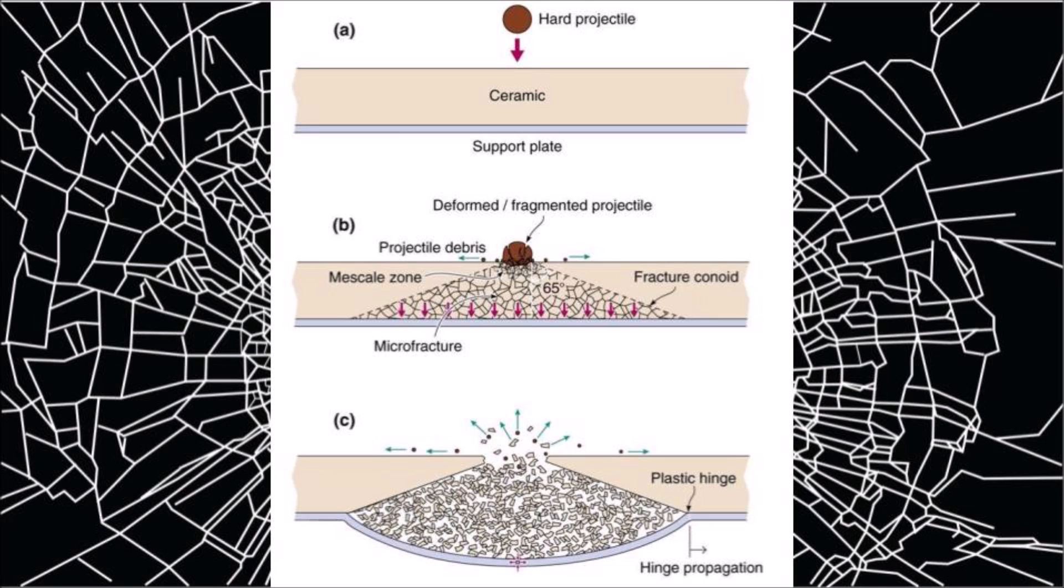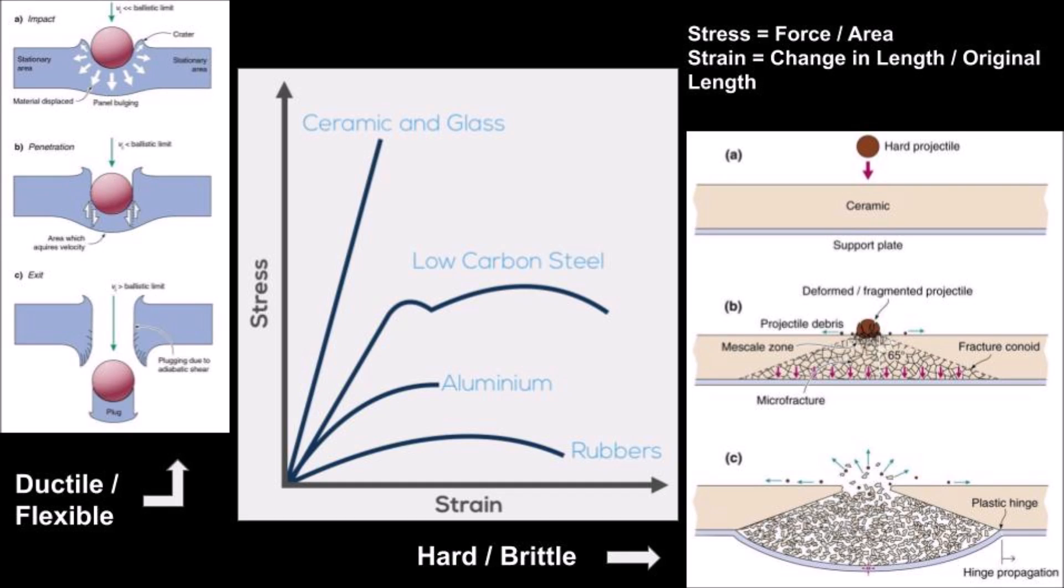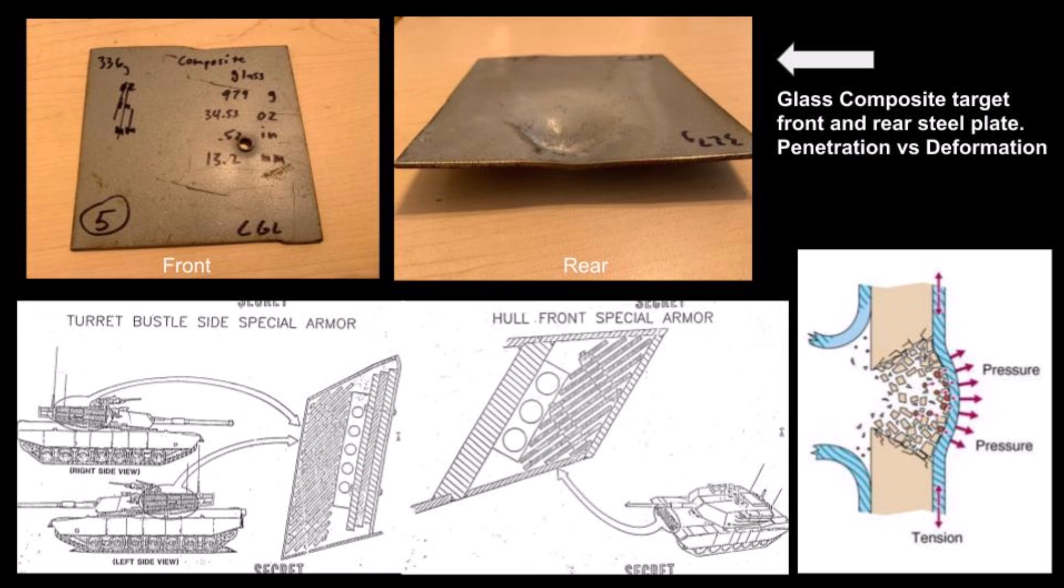Now, ceramics are hard yet brittle. When impacted, they reflect energy back into the projectile, deforming or shattering it. And then they absorb energy by shattering into a cone behind the impact site. This soaks up and spreads out force so that the following steel layer is impacted across a larger surface area, allowing it to deform and contain the projectile instead of failing and being penetrated. The multiple layers of composite armor take initial high energy focused impacts and spread them into a succession of low-speed dispersed impacts, which further backing layers can more adequately resist until the projectile is stopped.